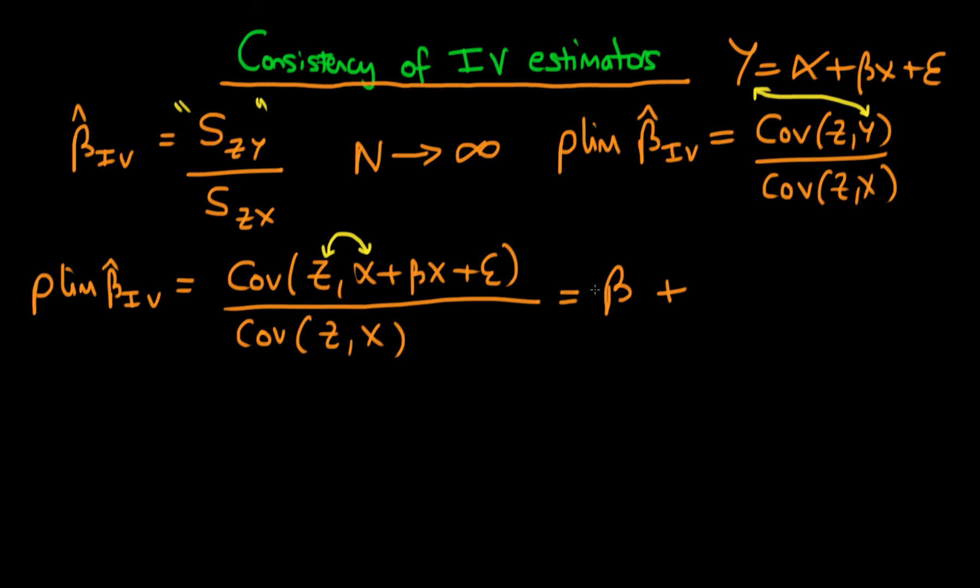And then finally we get, as our last term, the covariance of Z with epsilon divided by the covariance of Z with X. And straight away we can see that our estimator, our IV estimator, is going to be asymptotically unbiased if we have that the covariance of Z with epsilon is equal to zero.